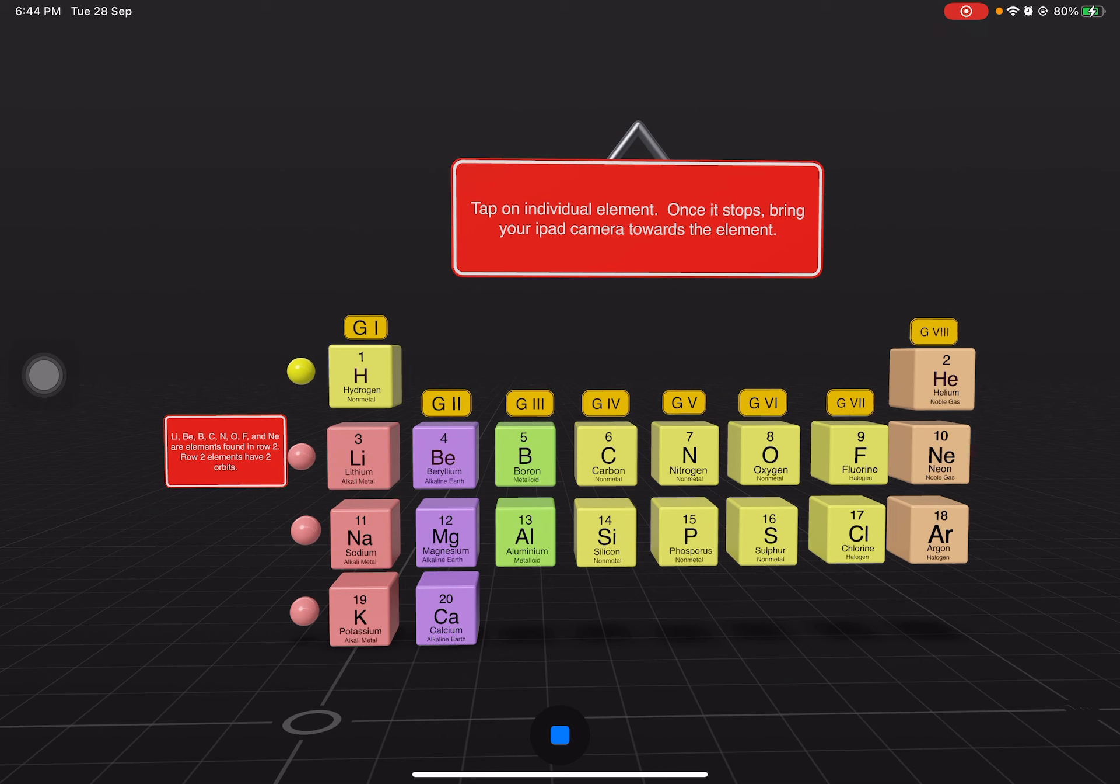Row two elements have two orbits. And then if I point to the card here, fluorine and chlorine are found in group seven. They are also known as halogens. Group seven elements have seven electrons in the last orbit.